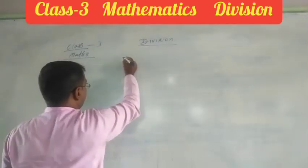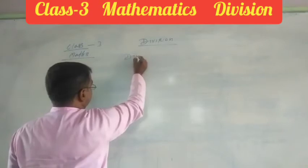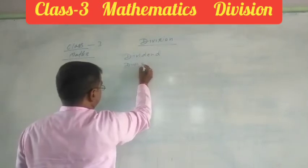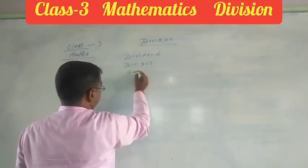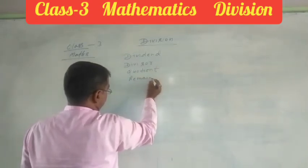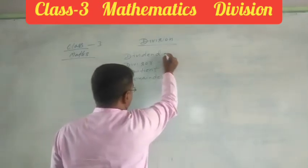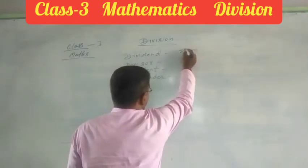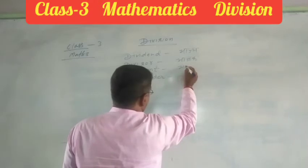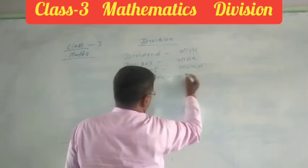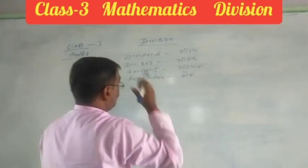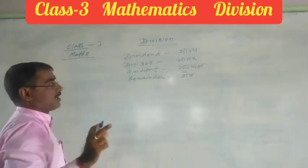There are four parts that are divided: dividend, divisor, quotient, and remainder. In Hindi, they are known as dividend, divisor, quotient, and remainder. How do you know what is dividend, what is quotient, and what is remainder?